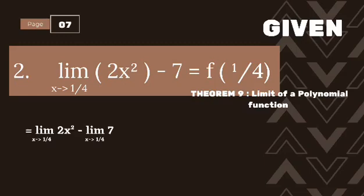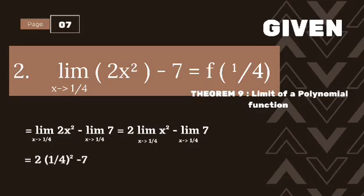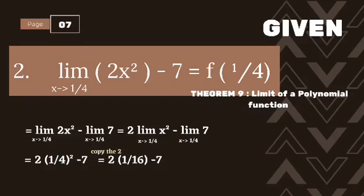It will become the limit of 2x squared minus the limit of 7, as x approaches 1/4. We also need to separate the 2x squared, so it becomes 2 times the limit of x squared as x approaches 1/4, minus the limit of 7 as x approaches 1/4. Simplifying: 2 times (1/4) squared equals 2 times 1/16, which equals 1/8. Then 1/8 minus 7 gives us negative 55/8, or negative 6.875.